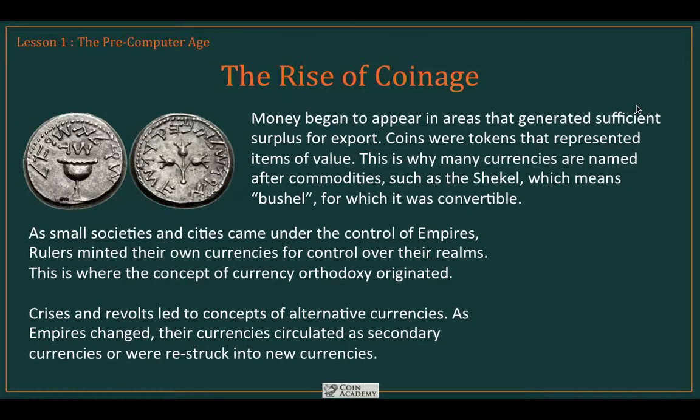As these small societies and cities came under the control of empires, the rulers wanted control over their realms, so they minted their own currencies. These currencies were unique to that region, and they tried to grow and expand their reach. This is where the concept of currency orthodoxy originated — if you wanted to exchange goods of value in a region, you had to use the proper currency. This is where the fiat currencies of today all came from.